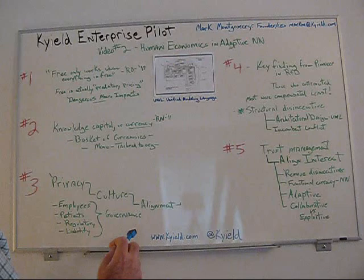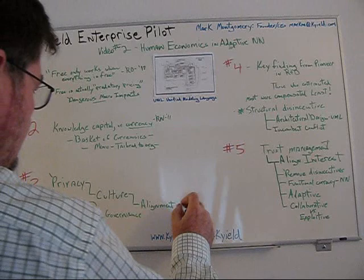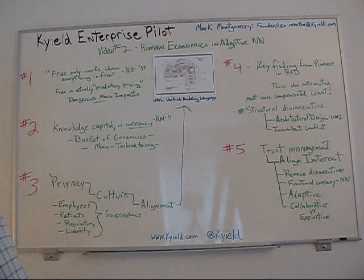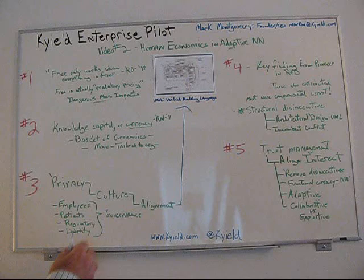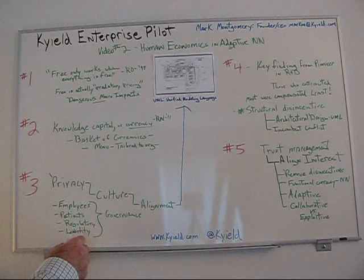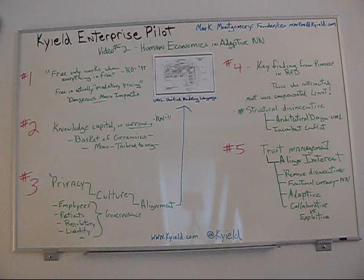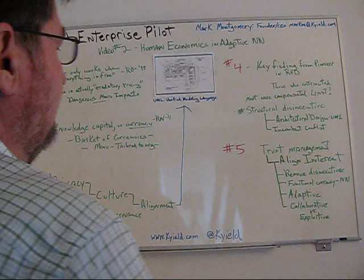Culture and, of course, alignment — this goes back to architecture and how important it is. Different needs for privacy include employees, patients in healthcare, and regulatory issues in healthcare in many parts of the world. Then there's the liability issue, which is often misunderstood and underappreciated, and falls within the governance that we talked about in the first video.